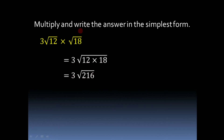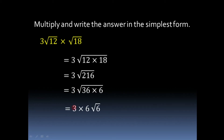The next step: we have 3 into root 216, because 12 into 18 is 216. Now this is the answer but we are asked to write it in simplest form. We split 216 such that one factor is a perfect square. 216 can be written as 36 into 6. 36 is a perfect square, it is 6 squared. Taking 36 outside the square root sign, we take its square root: 3 into 6 into root 6, which gives 18 root 6. So the product of 3 root 12 into root 18 is 18 root 6.